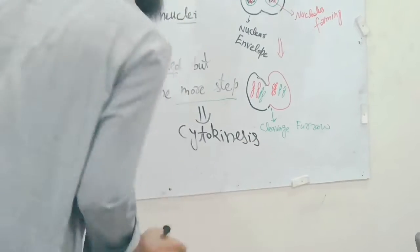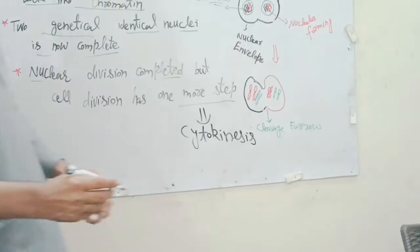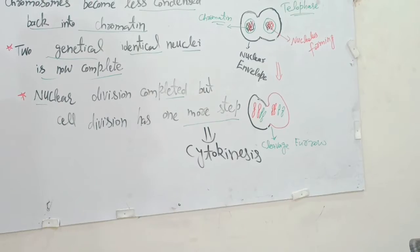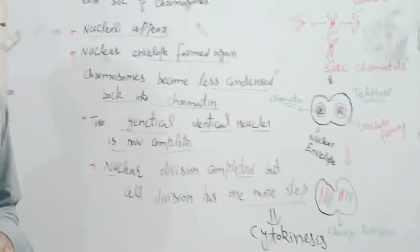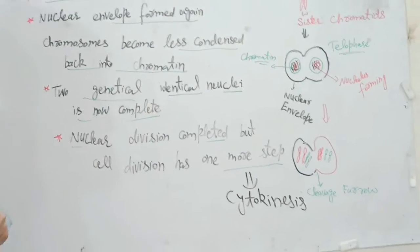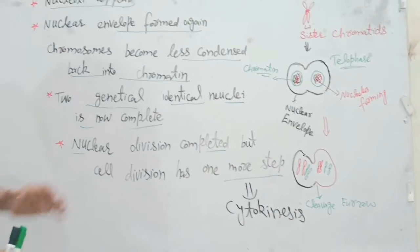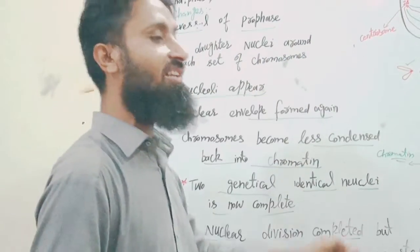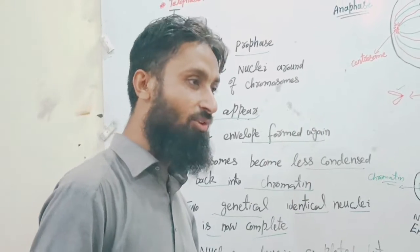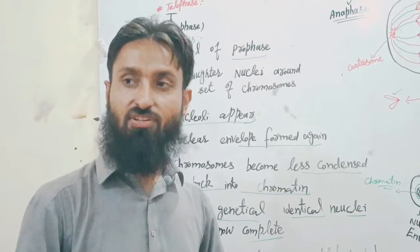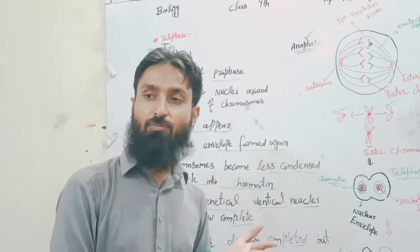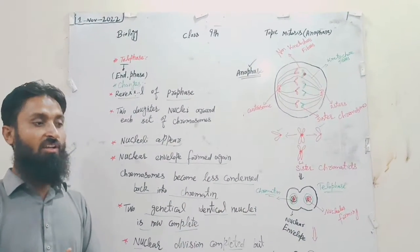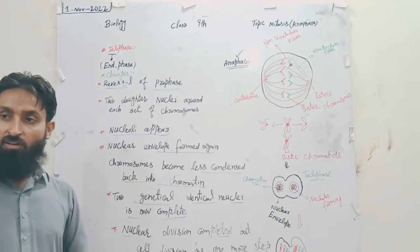You have studied the two major phases of cell division: one is karyokinesis, and the second is cytokinesis. Today, alhamdulillah, we have completed karyokinesis. In our next lecture, we will study cytokinesis in animals and plants, and we will complete both.